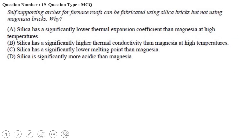Next question: self-supporting arcs for furnace roofs can be fabricated using silica bricks but not using magnesia bricks. Why? The options are: silica has a significantly lower thermal expansion coefficient than magnesia at high temperature; silica has significantly higher thermal conductivity; silica has a significantly lower melting point; or silica is significantly more acidic than magnesia.